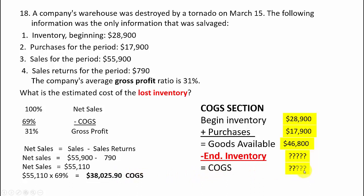We plug that cost of goods sold in, and the lost inventory — or ending inventory we should have had — is the difference between goods available of $46,800 and cost of goods sold of $38,025.90, which gives us $8,774.10. That's question 18.